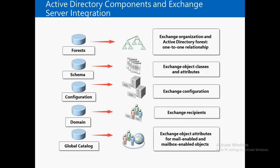Exchange classes can be Exchange-specific objects such as agents and connectors, and Exchange attributes. We might also have Exchange recipients, users, or groups. To manage the properties of those users or groups, we need certain attributes from which we can manage object settings. For example, if we go to a user's properties, we'll find settings for web applications or unified communications. These kinds of classes and attributes integrate with Active Directory and help Exchange with object management.